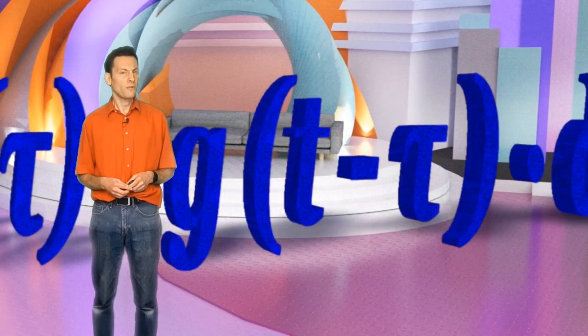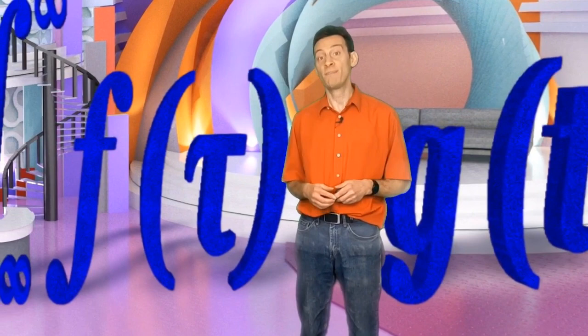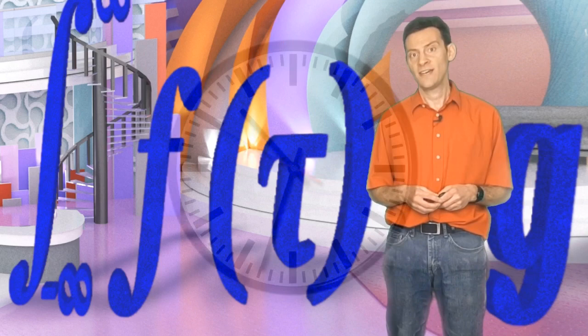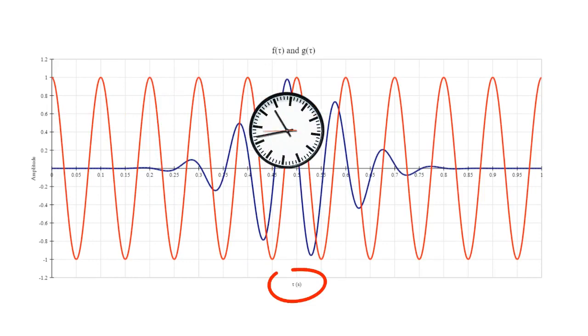So, what does tau mean? Tau is what is known as the independent variable. In other words, it is tau that makes the signal do what it does. So, we plot it on the x-axis. Time is an example of an independent variable. So, let's make the x-axis the time axis. So, tau is time in seconds.